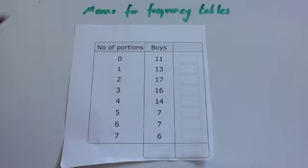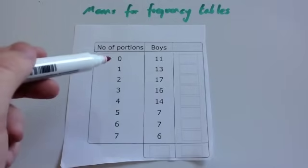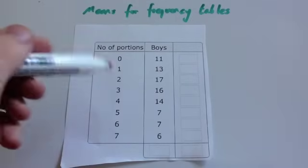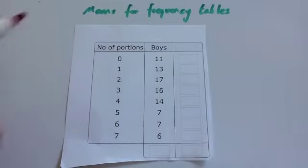We're now going to look at means from frequency tables. So we have got a table with information, it's a frequency table looking at the number of portions of fruit and veg a day, so five a day should be what people are going for, and the number of boys that have eaten that number of portions.